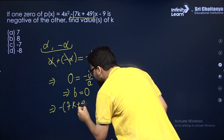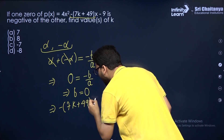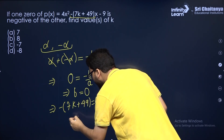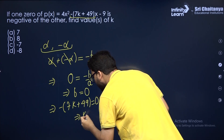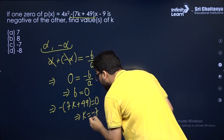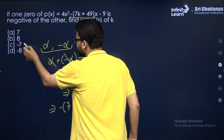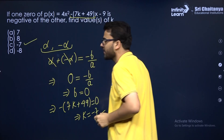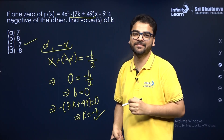Setting −7k + 49 = 0 and solving this equation gives k = −7. So k = −7 is the answer. I hope it is clear.